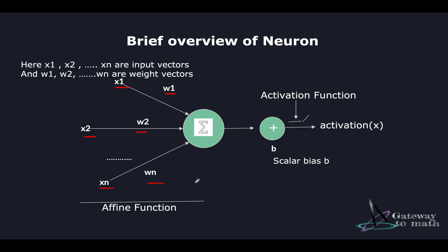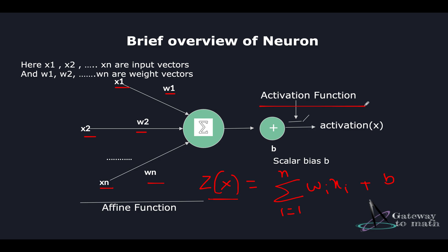The complete operation can be represented as: z(x) equals the summation from i equals 1 to n of w_i times x_i plus p. The function z(x) is called the unit's affine function. The output of z(x) is then passed through an activation function.